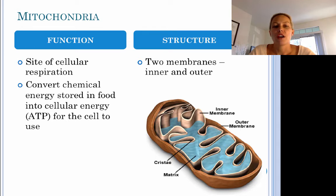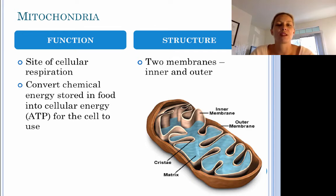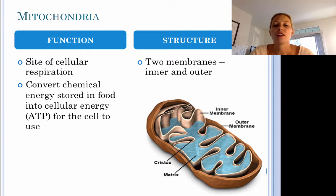Next, we have our mitochondria. The mitochondria is responsible for cellular respiration — it's the powerhouse of the cell. It's responsible for converting the chemical energy stored in food into cellular energy, ATP, for the cell to use. Since the cell can't use straight sugar or glucose directly, the mitochondria breaks down that sugar and converts it into a substance the cell can actually use.